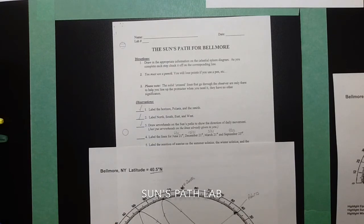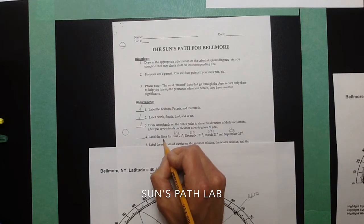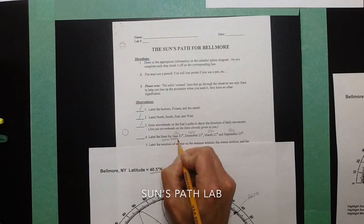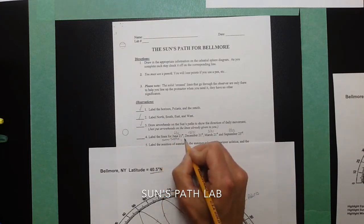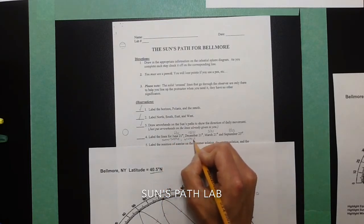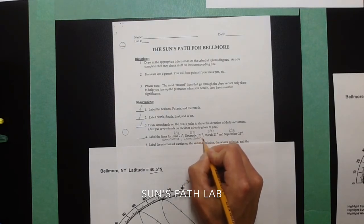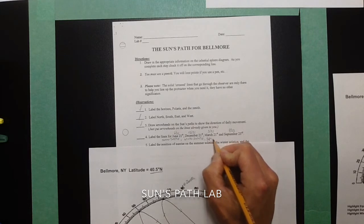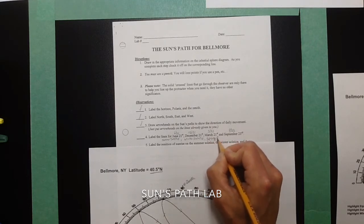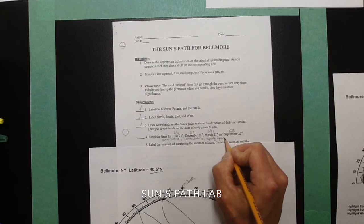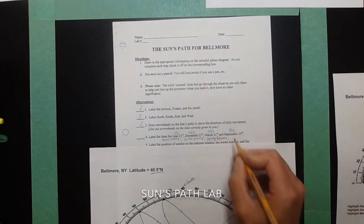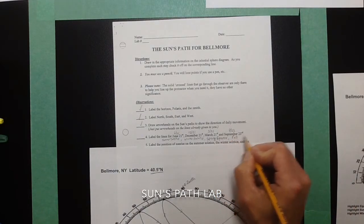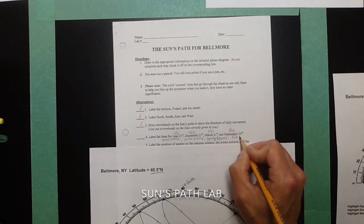Now, because we're in the northern hemisphere, June 21st is the summer solstice. December 21st is the winter solstice. March 21st is the spring, also sometimes called the vernal equinox. So you have the spring equinox. And September 23rd is the fall or autumnal equinox.